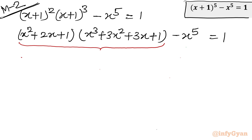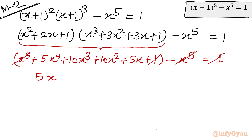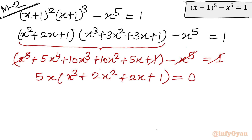Expanding the brackets yields x^5 + 5x^4 + 10x³ + 10x² + 5x + 1 minus x^5 = 1. Canceling the x^5 terms and the constant 1, then factoring out 5x gives: 5x(x³ + 2x² + 2x + 1) = 0. This leads to the same solutions: x = 0, and solving x³ + 2x² + 2x + 1 = 0.